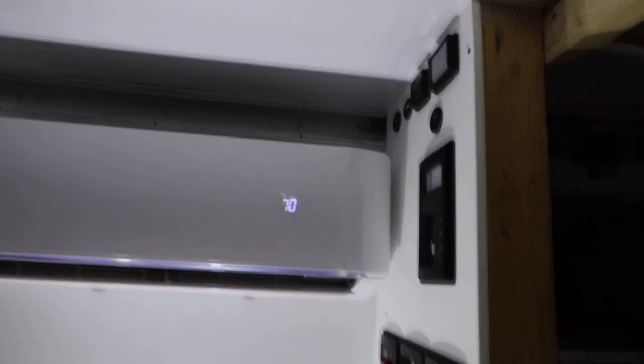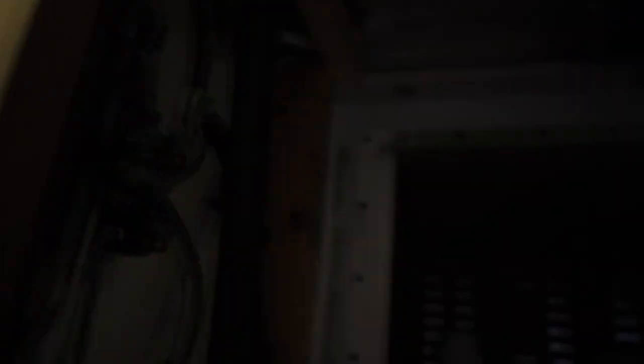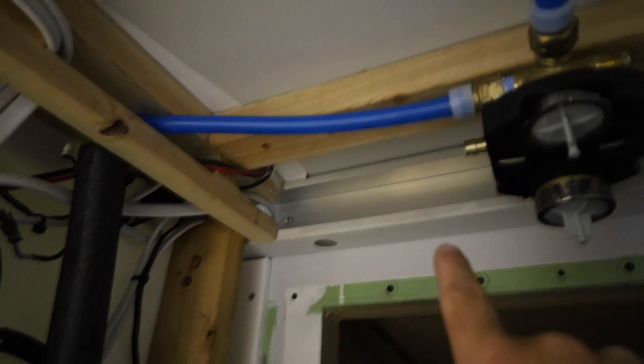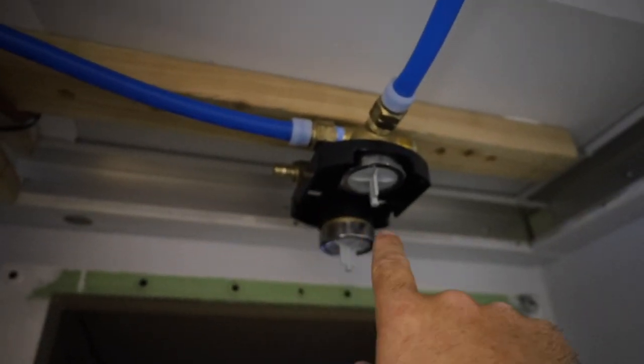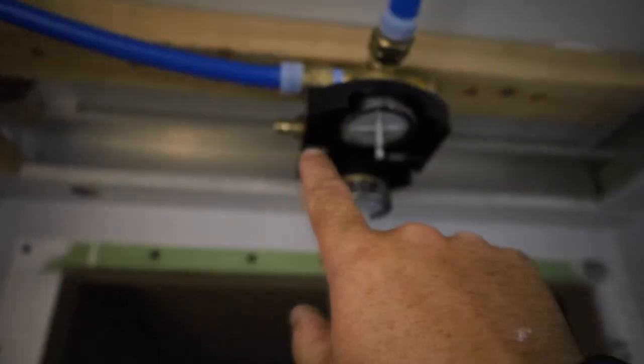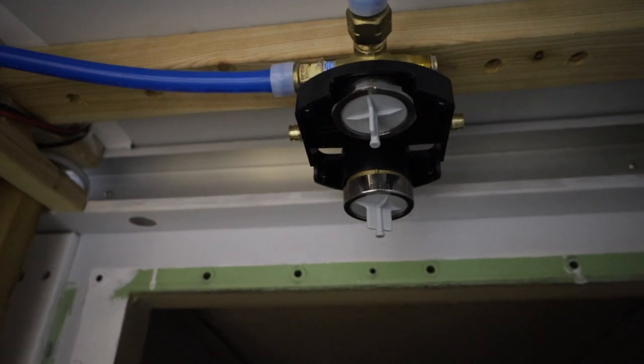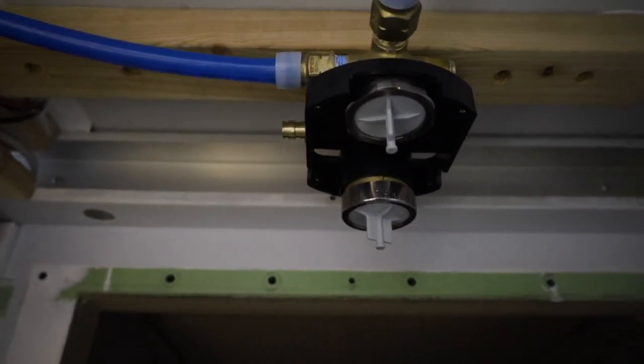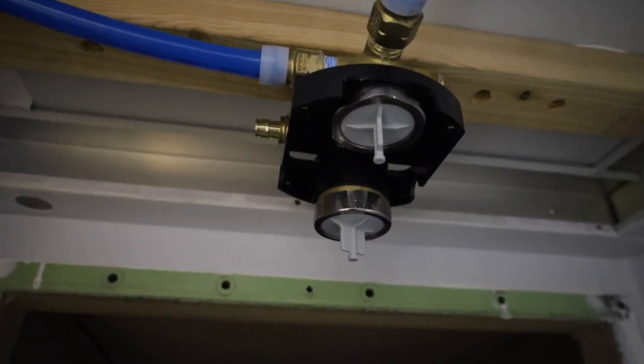So after the pipes come out of this corner they continue down this chase and then they come into my main functions wall here. Once they're into that wall, they continue right here where they'll tee out and they'll actually tie into this shower valve for the hot and the cold on each side. Now if you're wondering why my shower valve is on the ceiling, I placed it here for a couple reasons.